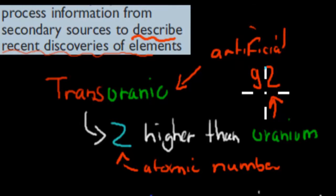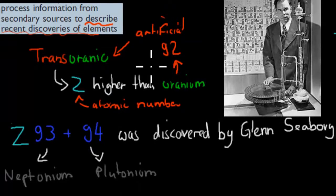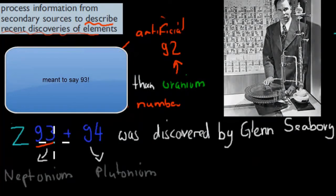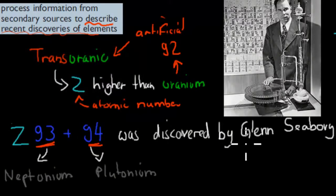I'll go through the order of how they got discovered and who discovered them. First, we've got the very first transuranic elements, which are 93, neptunium, and 94, plutonium, discovered by Glenn Seaborg. This name might be good to remember. This is Glenn Seaborg right here. He was an American scientist. He and his team worked in California for the University of Berkeley.